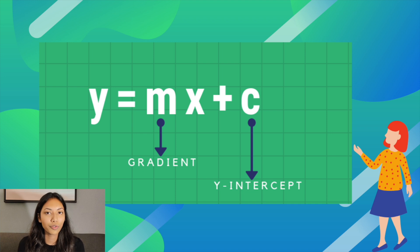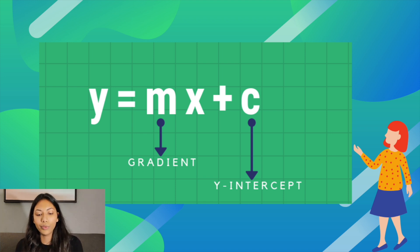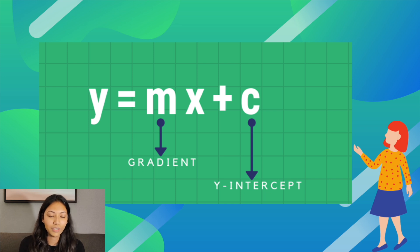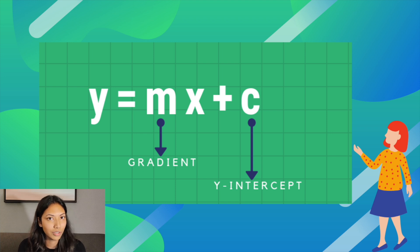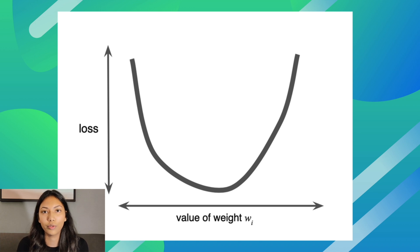If you recall, the equation for this particular linear regression model is y = mx + c, because we are only looking at one variable — years of experience — so it's not multivariate linear regression. When thinking about linear regression, we want to understand how the machine learning model actually determines the values m and c. Now that we understand loss, we can understand how the linear regression model determines m and c.